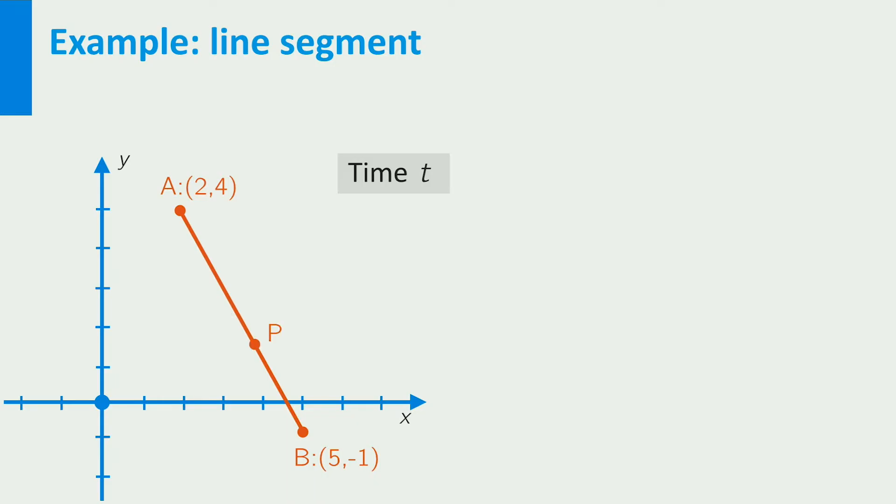In fact, if at some point t, the mouse is at position P, then the vector AP is exactly t times the vector AB, that is, t times the vector (3, -5).